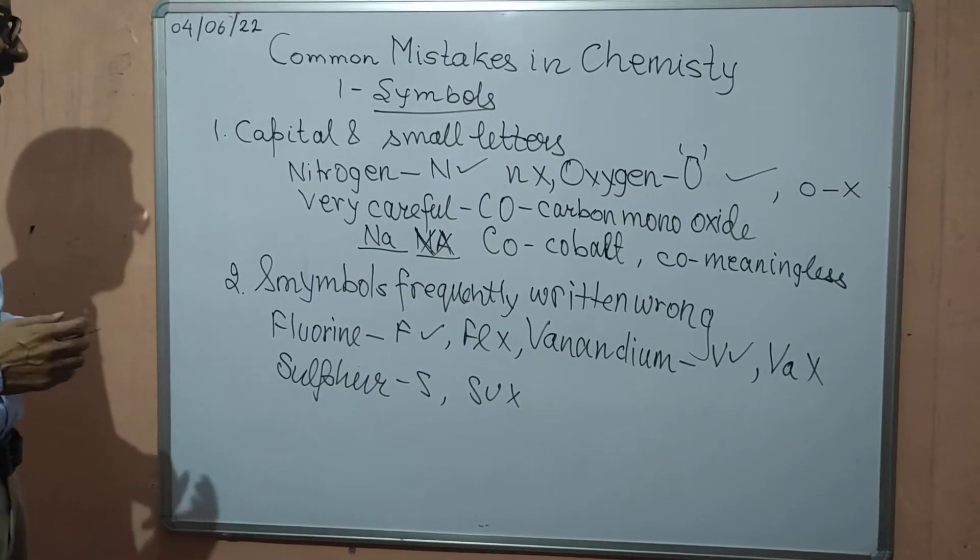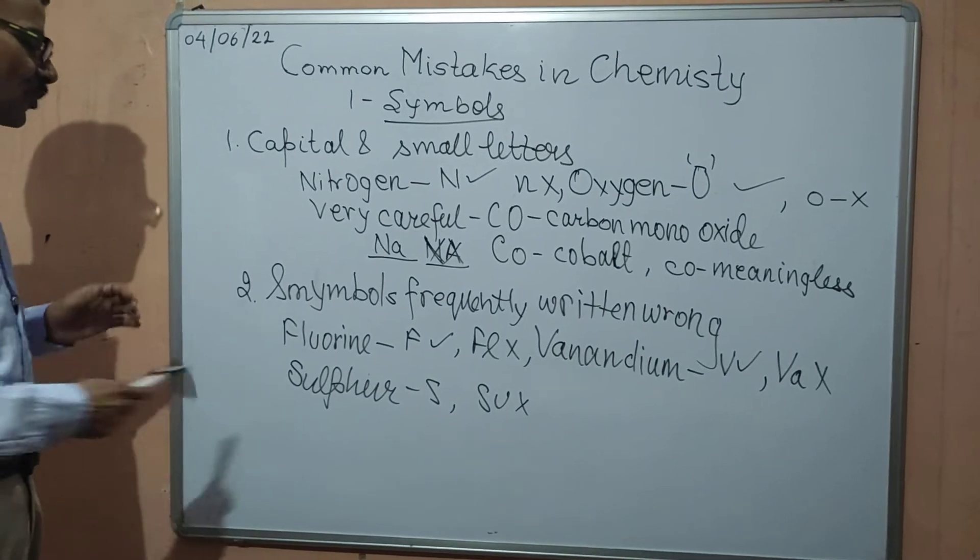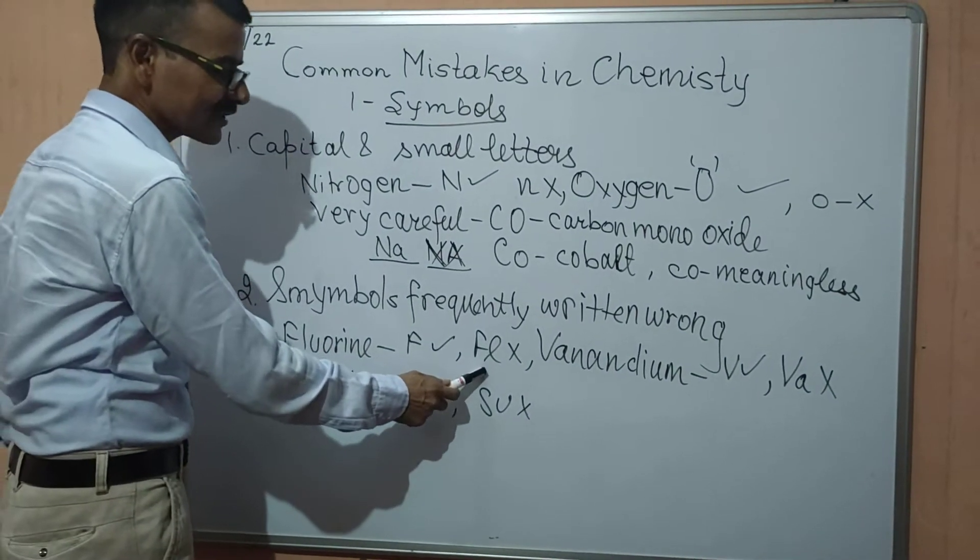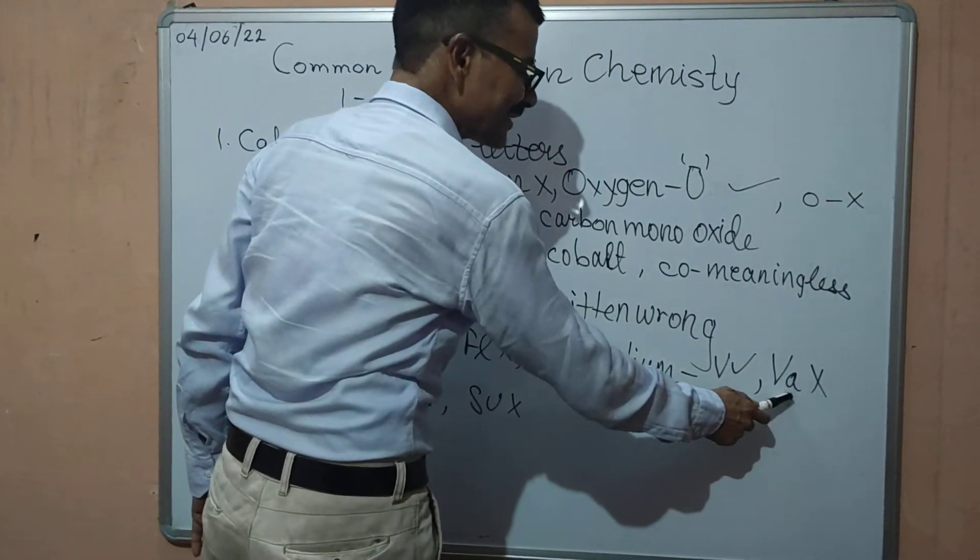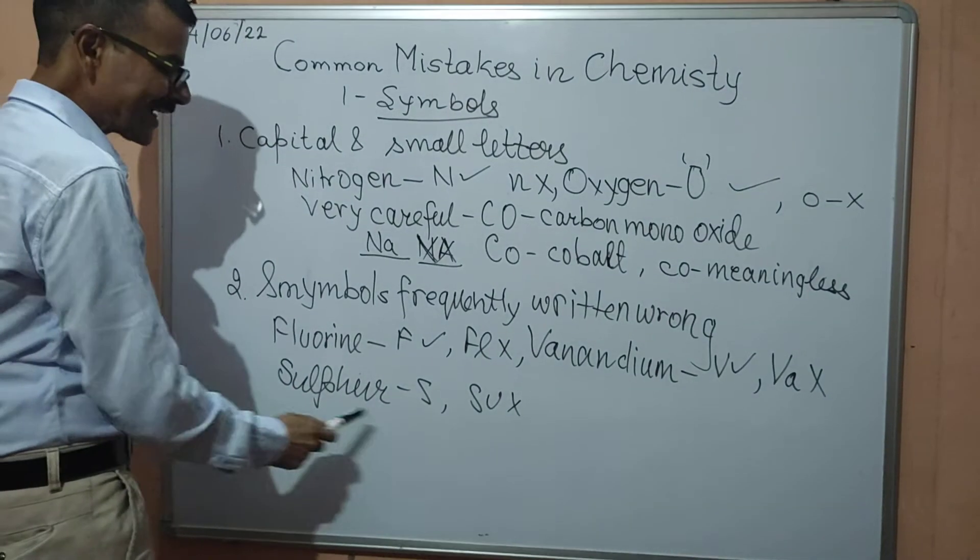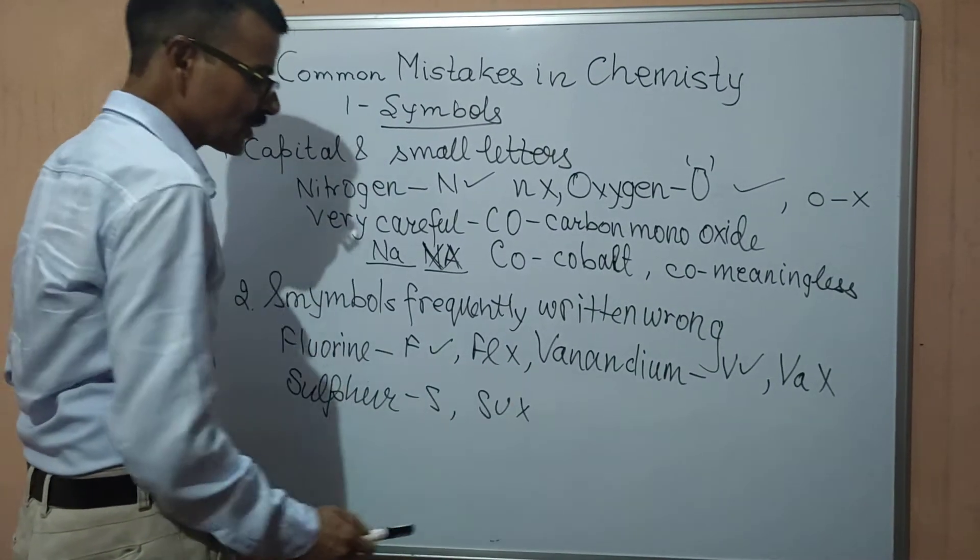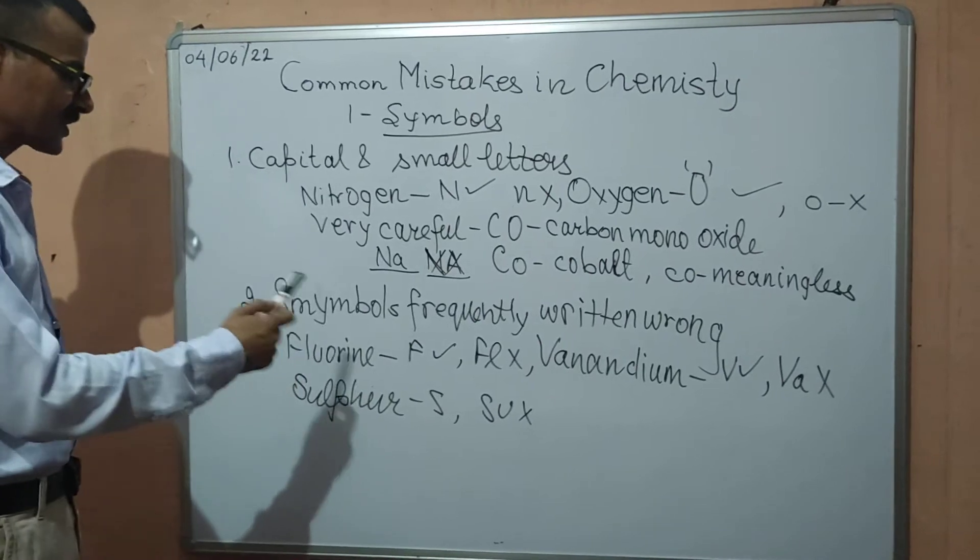Symbols which are frequently written wrong by the students. Fluorine symbol is F, students write it as FL. Vanadium V, students write it as VA. Sulphur S, students write it as SU. So children these are some mistakes.